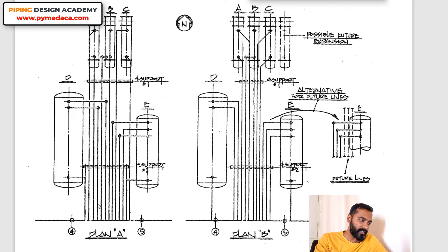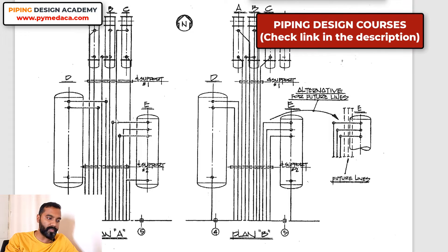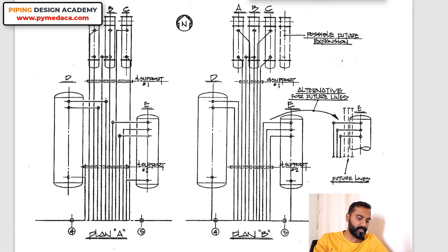Looking at the difference between the two pictures: in one layout, lines are elevated and dropped inconsistently. In the better layout, lines are arranged so that those going to the farthest heat exchangers are placed in the center, avoiding overlaps. Lines going to equipment on the right and left are positioned accordingly so they can simply make a turn. The result is fewer elbows — a more economical piping design.